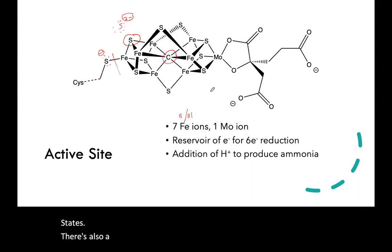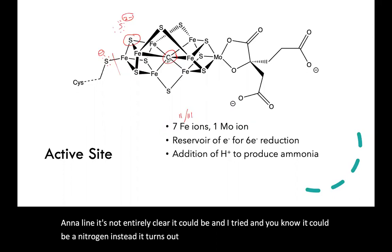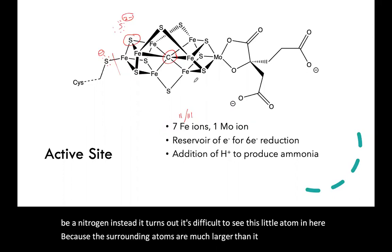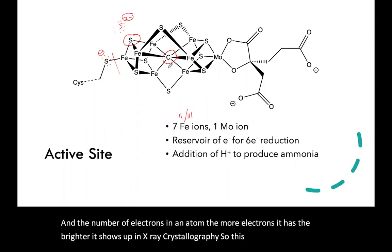There's also a curious ligand in the middle here. It's thought to be a carbide anion. It's not entirely clear—it could be a nitride, a nitrogen instead. It turns out it's difficult to see this little atom in here because the surrounding atoms are much larger than it is. In x-ray crystallography, the number of electrons on an atom determines how bright it shows up, so this is probably a carbide, C4-minus, but it's not completely clear.